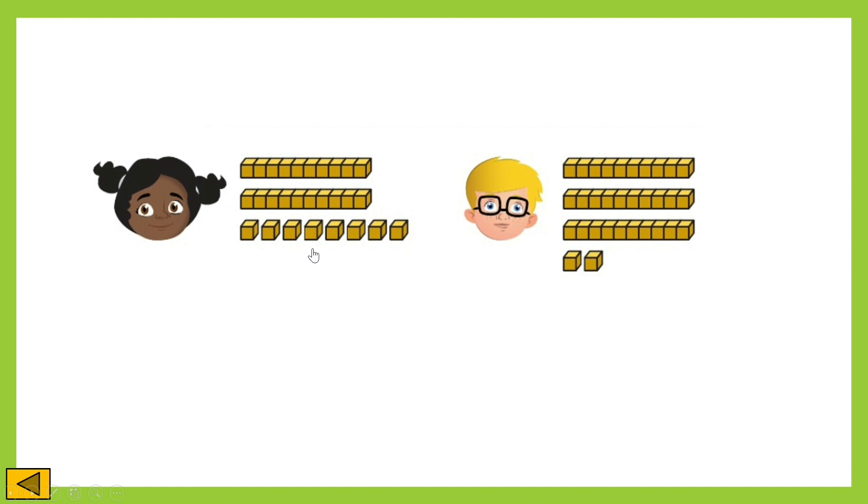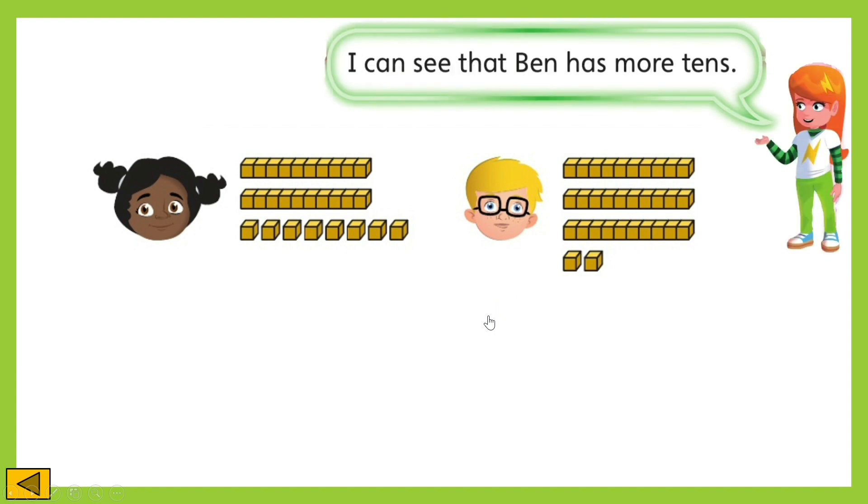Now, study these two number representations. What do you notice? Do you agree with Astrid that Ben has more tens? Let's see. Ben has one, two, three tens. Well, Ola has two tens. Therefore, Ben's number, which is 32, has more tens than Ola's number, which is 28.